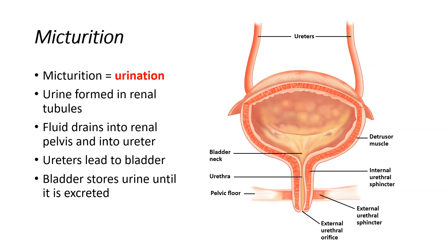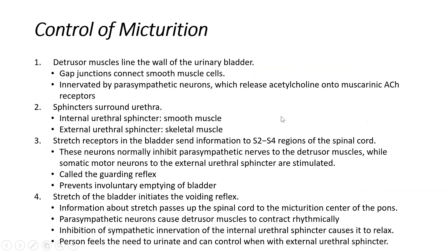The fluid formed in the kidneys drains into the renal tubules, then the renal pelvis, then into the ureter. From both kidneys, urine drains into the respective ureter on each side, and all of that is dumped into the bladder where it is stored until we get the urge to urinate. Three main divisions of the nervous system work together to bring about micturition: the parasympathetic system, the sympathetic system, and the somatic component, because we do have some voluntary control over when micturition occurs.